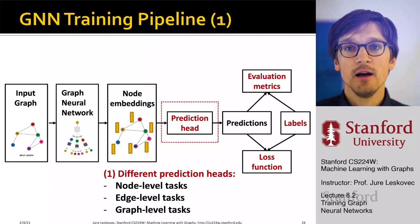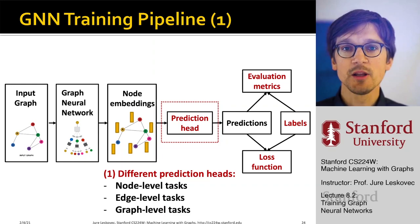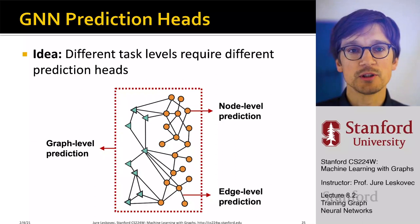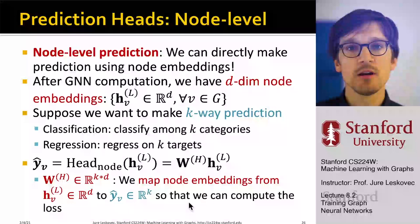Let's first talk about the prediction head. The output of the final model can have different prediction heads: node-level prediction heads, link/edge-level, as well as entire graph-level prediction heads. Different tasks require different types of prediction outputs—we can have entire graph level, individual node level, or edge level, which is a pairwise prediction between a pair of nodes.